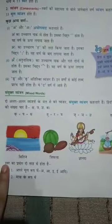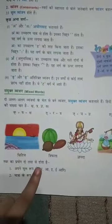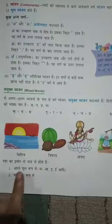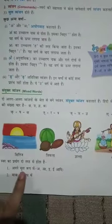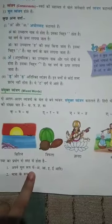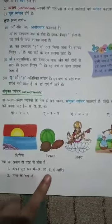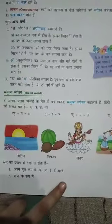So friends, Swar ka prayog do tarah se hota hai. First, apne mool roop me hota hai — ek chhota, bada, chhoti, bada, aadi — the vowels in their original forms.